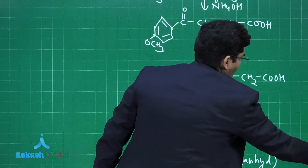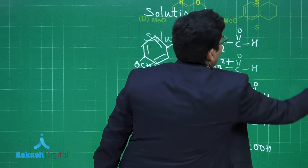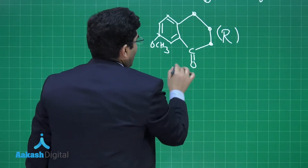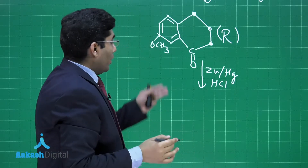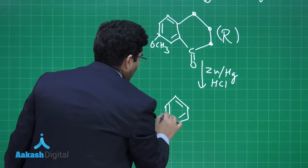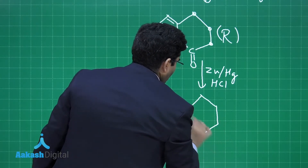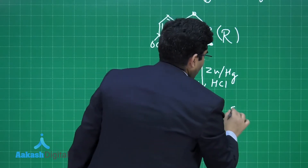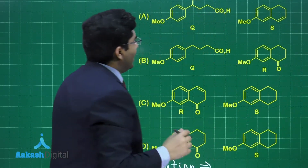According to the question, this cyclic product is R. Now we react R again with zinc amalgam (Zn-Hg) and HCl — Clemmensen reduction again. The C=O group converts to CH2, giving a benzene ring with a methoxy group and a fully reduced cyclic structure. This is the final product S.